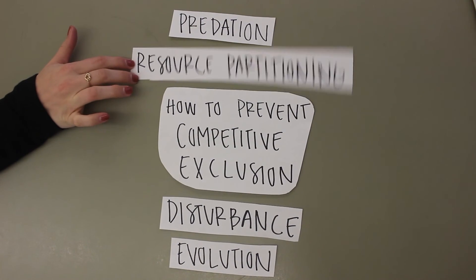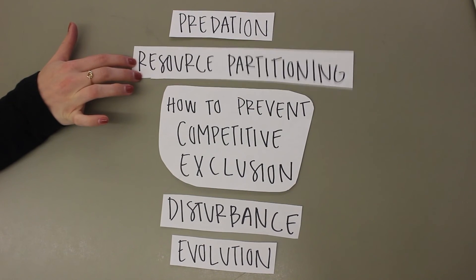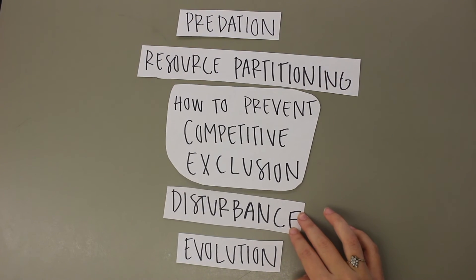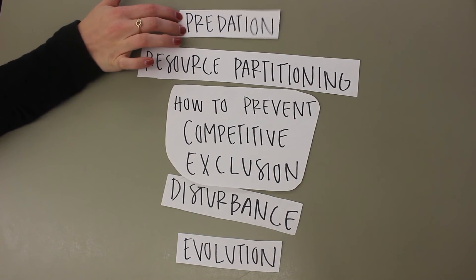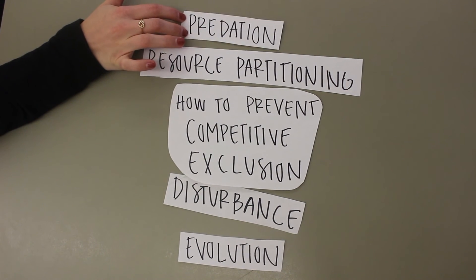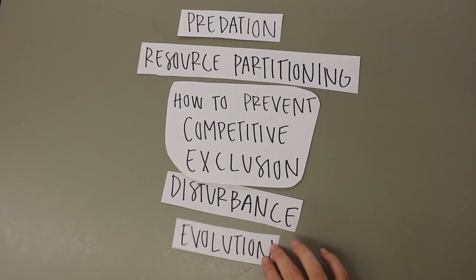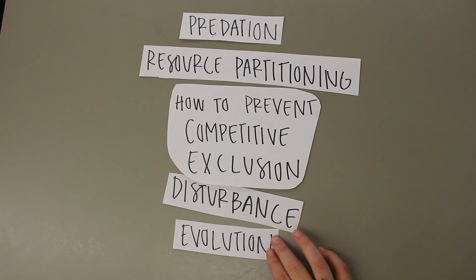Resource partitioning is when several species use a limited resource so diversely that competition does not occur. Disturbance is when several actions prevent a specific population from growing to the point where limited resources occur. Predation has keystone predators that prevent exclusion by maintaining biodiversity and preying on the best competitor. Evolution allows several species to evolve in ways that can prevent them from having competition with others in the future.